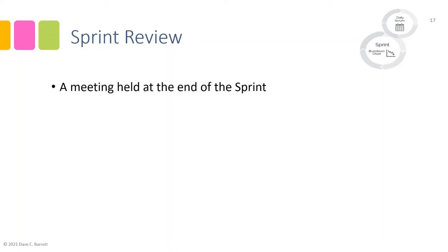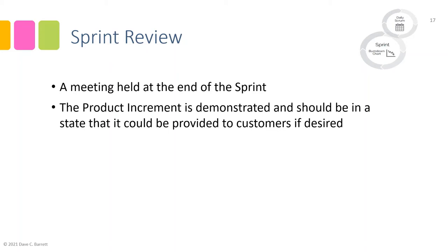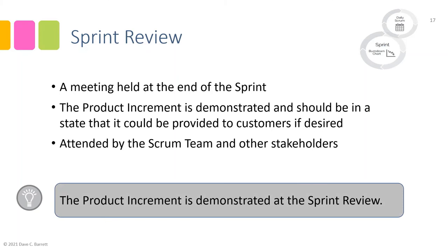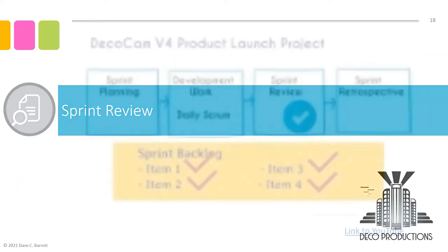The sprint review meeting is held at the end of the sprint — on the last day, a meeting will be held. The product increment — the result of the sprint — is demonstrated and should be in a state that it could be provided to customers if desired. It is attended by the scrum team and other stakeholders as appropriate. Key idea: the product increment is demonstrated at the sprint review, and attendees and other stakeholders may provide feedback to the team, creating a significant information exchange. Let's see the video of the sprint review meeting.